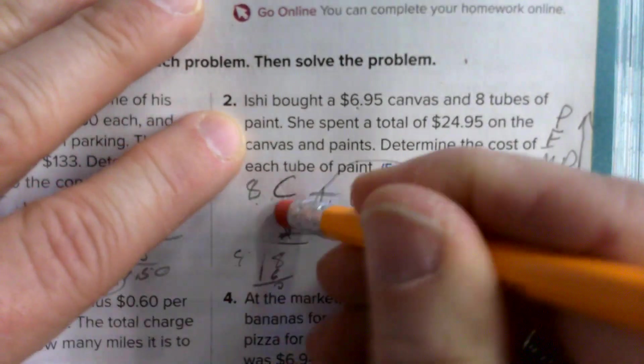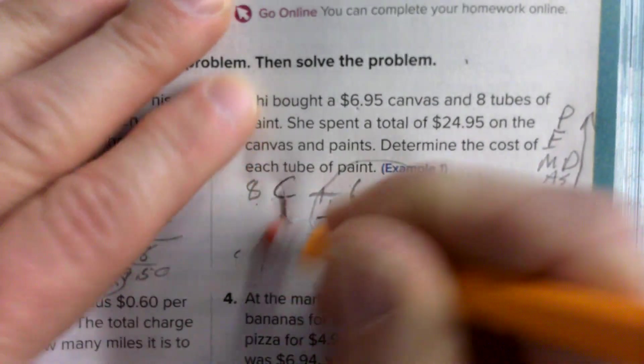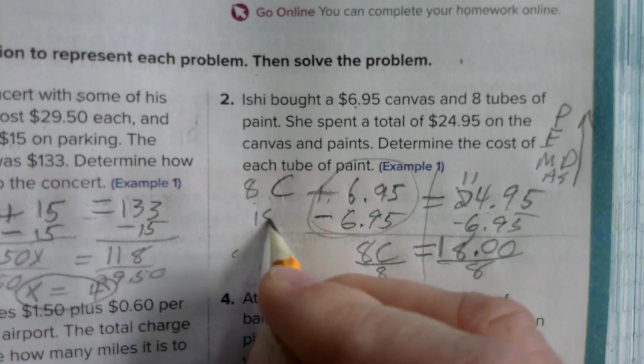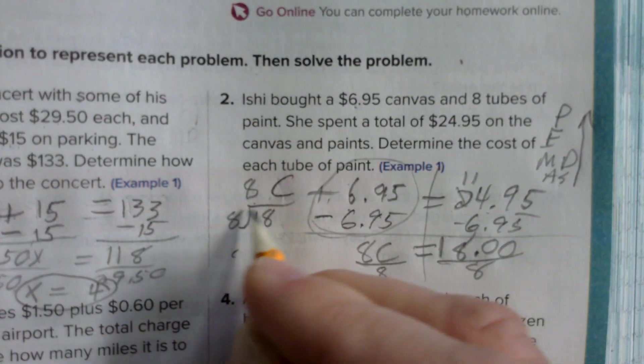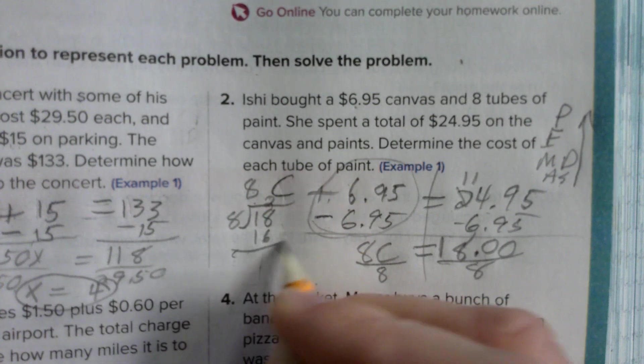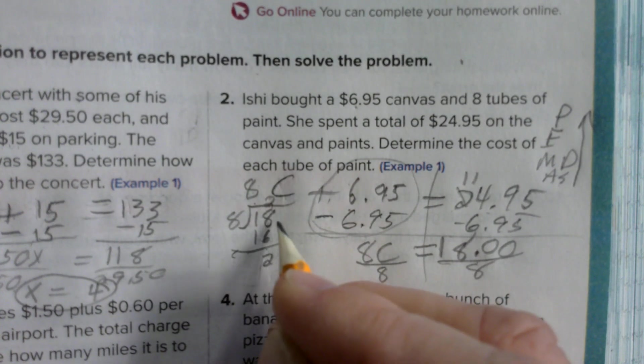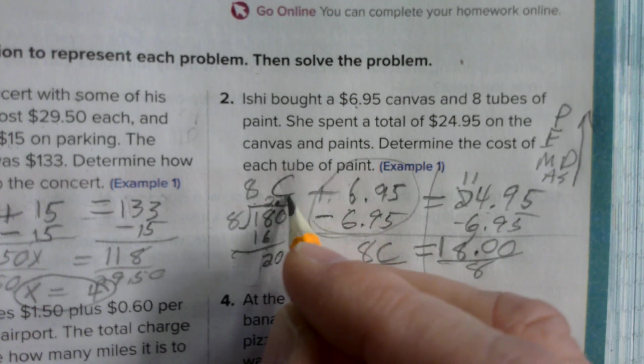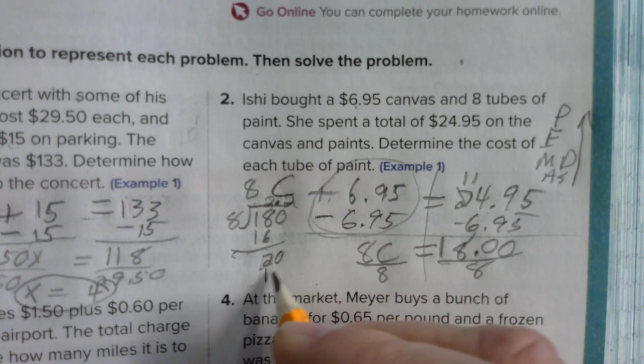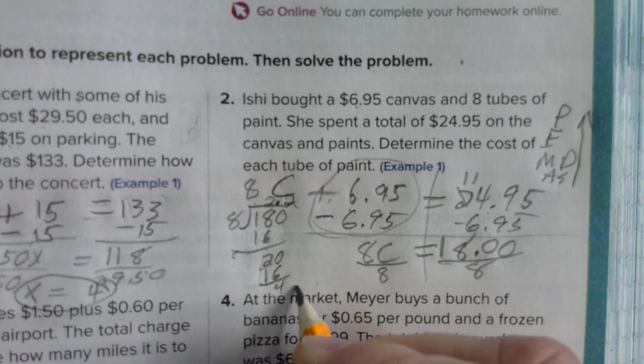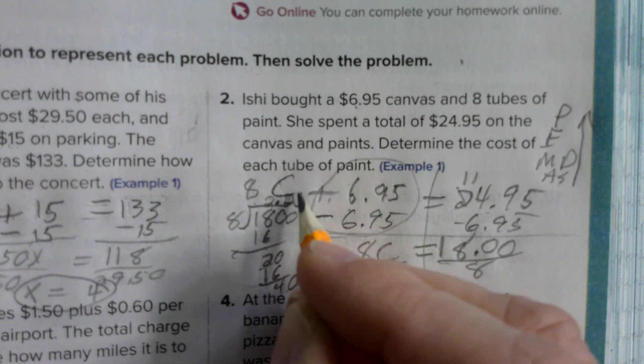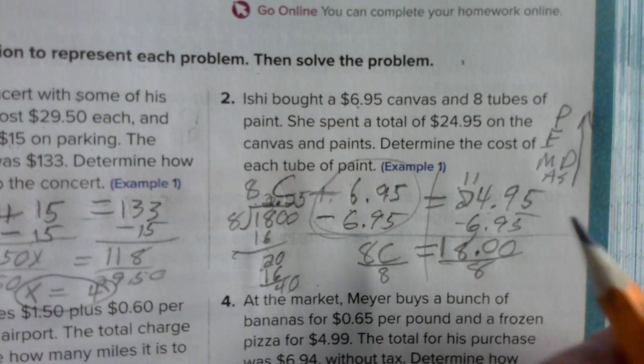Let me rewrite this whole thing so we have enough room for it. 18 divided by 8. 2 times 8 is 16. 18 minus 16 is 2. Bring down a zero. There's a decimal here. 8 goes into 20 two times, that's 16. 20 minus 16 is 4. 8 goes into 40 five times. So $2.25 is my answer.